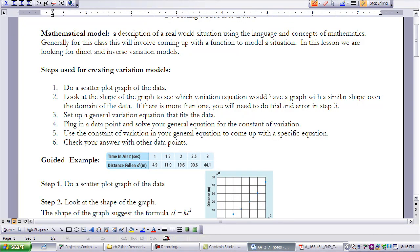You'll need to set up a general variation equation that fits the data. You're going to plug in a data point and solve your general equation for the constant of variation. Then you're going to use that constant of variation in your general equation to come up with a specific equation. And then you're going to check your answer with other data points, and sometimes you're going to be asked to predict what other data points might look like.